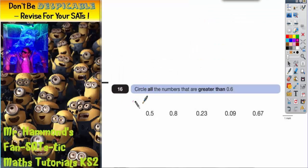Question 16. Circle all the numbers that are greater than 0.6. Some of these numbers we've got to choose from only have one digit after the point. And some of them have two.